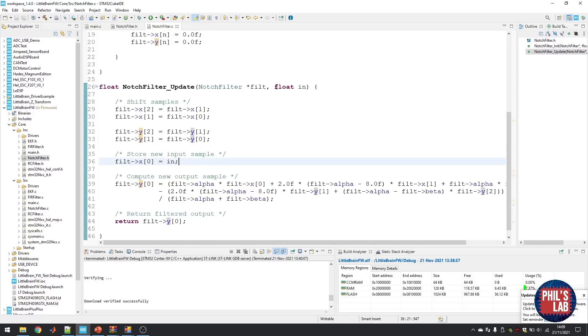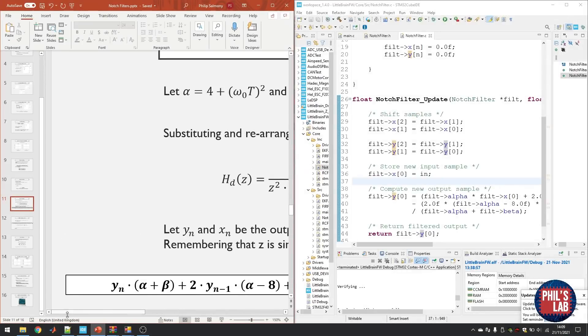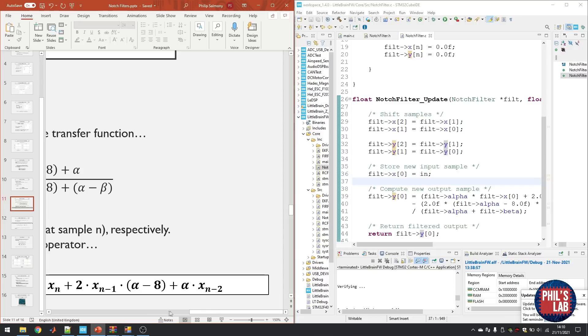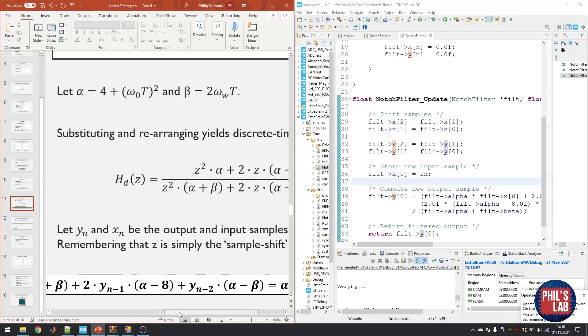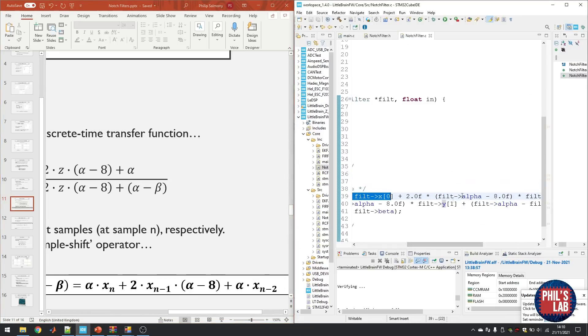Then we have to store the newest input, which is passed by this float, into our latest input sample. Then we are ready to compute the output sample. And the way we do that is simply by implementing this difference equation. Rearrange so we have y[n] on one side and everything else on the other side. And that's all I've done here. So you can see all the terms to do with x. Alpha x[n] plus 2 times alpha minus 8 times the previous input sample plus alpha times the previous previous input sample.